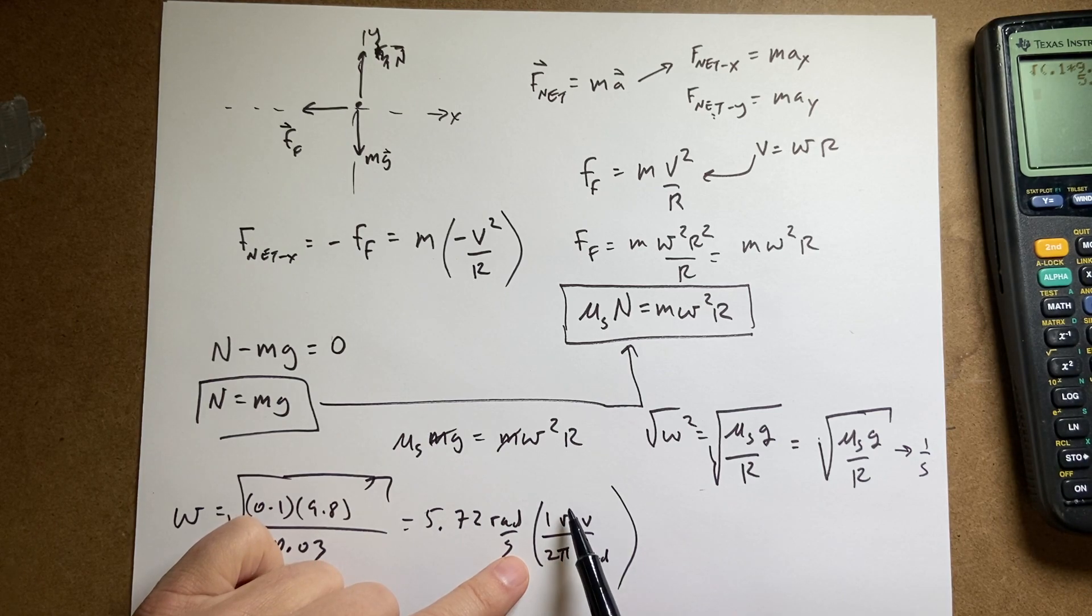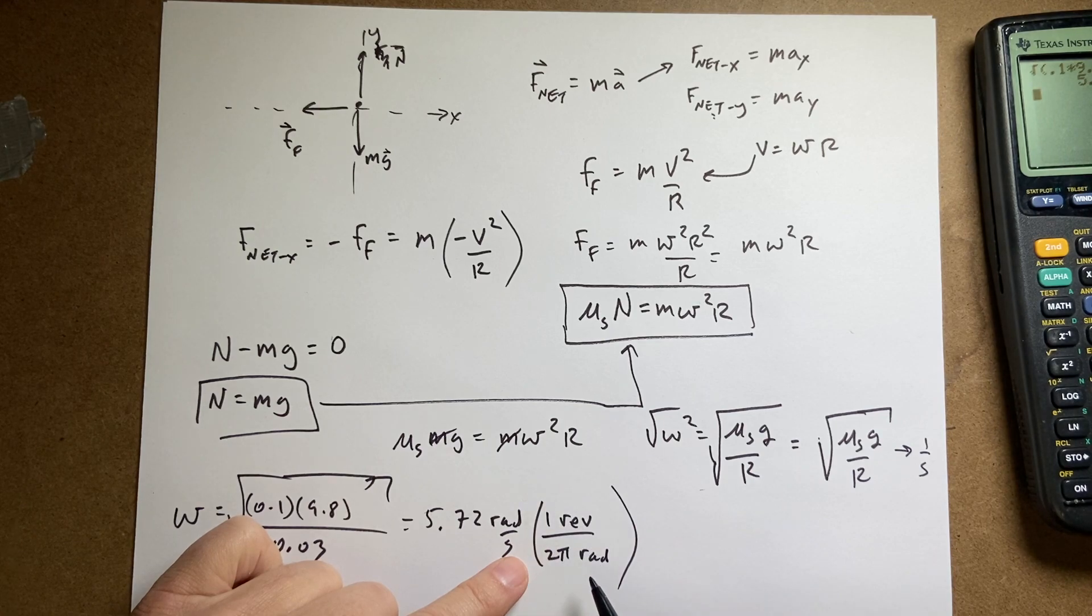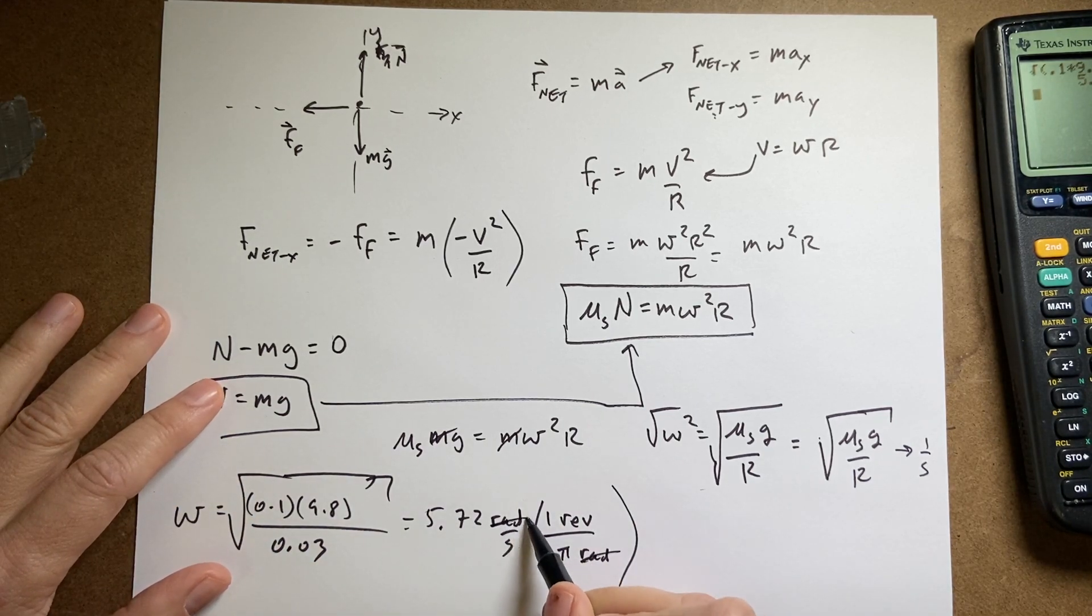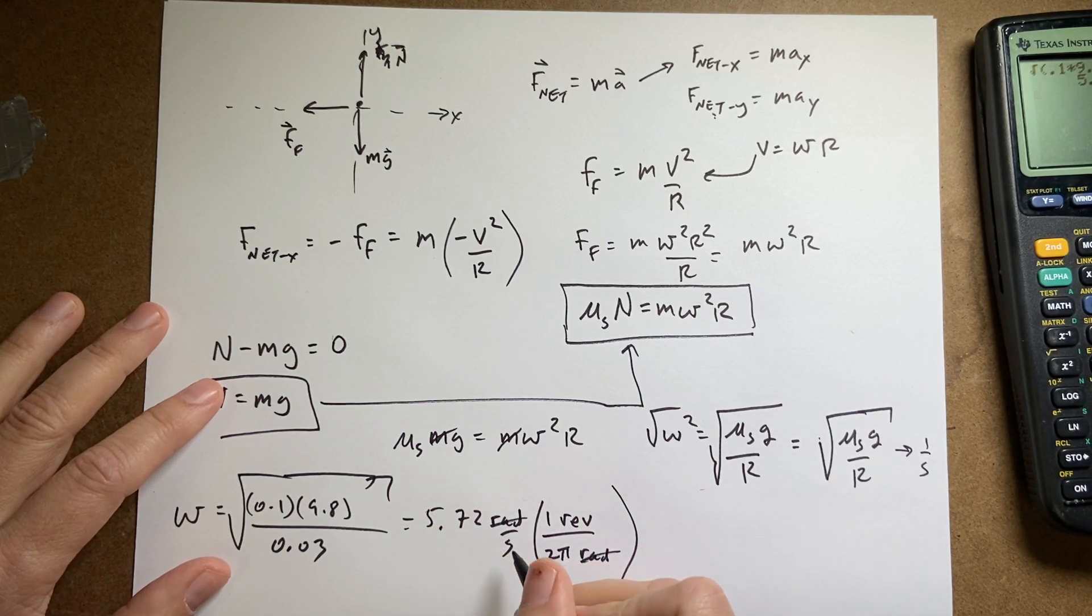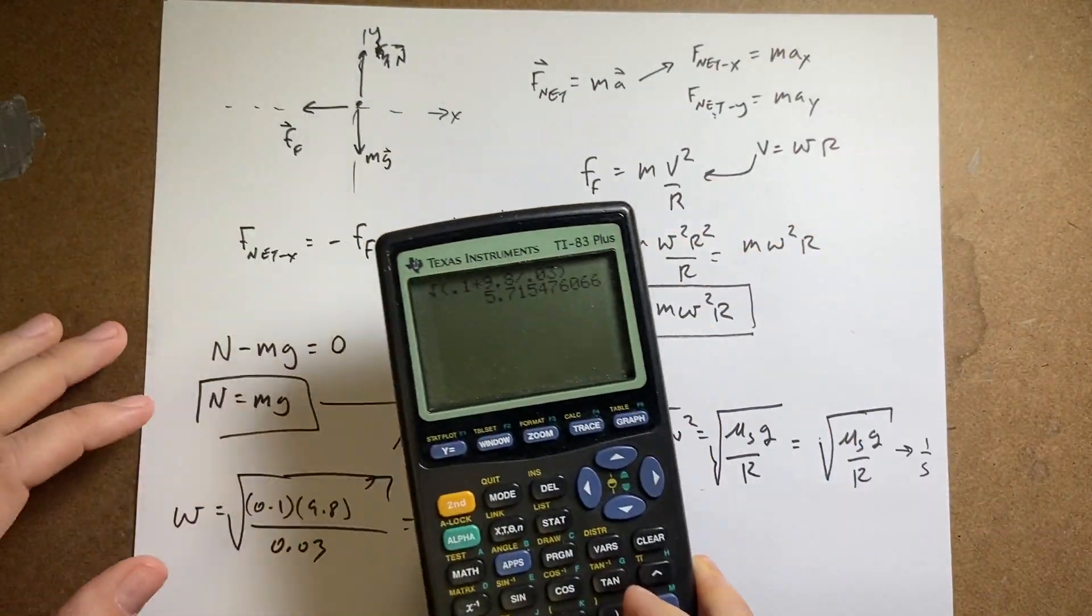Since 2 pi radians is 1 revolution, then this is the quantity 1. But these fake units can cancel and I get revolutions per second. So if I take that and divide it by 2 pi. So let's just do that.